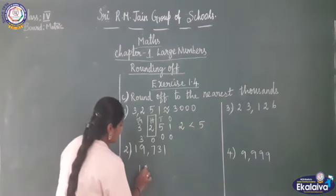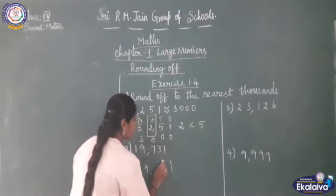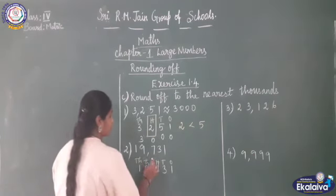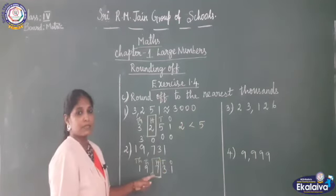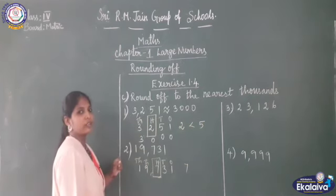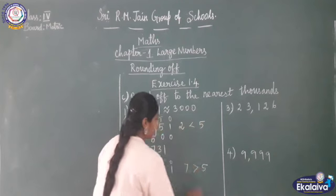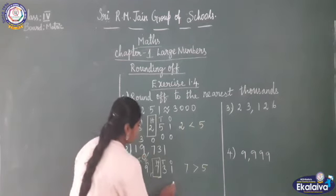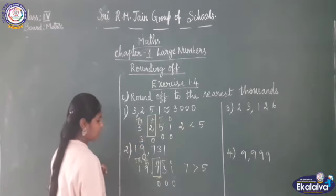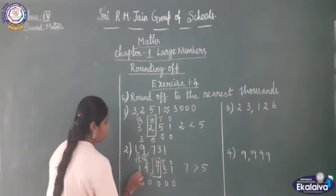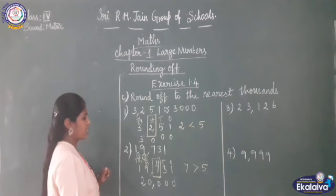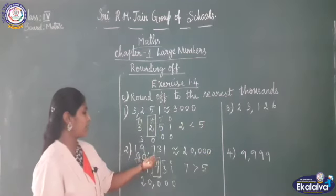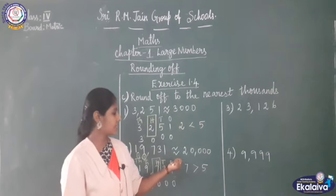Next: 19,731. Write the place value — ones, tens, hundreds, thousands, ten-thousands. Check the hundreds place. The value is 7. 7 is greater than 5, so add 1 to the thousands place and put 0 in ones, tens, and hundreds. 9 plus 1 is 10, so 0 carry over 1. 1 plus 1 is 2. So the answer is 20,000. 19,731 is rounded off to the nearest thousand as 20,000.